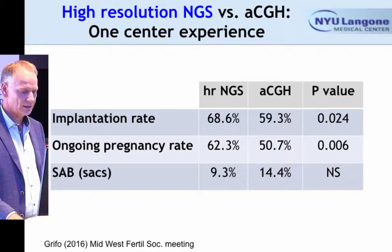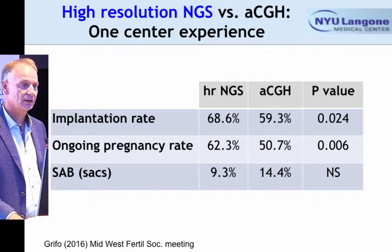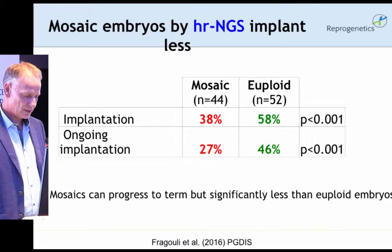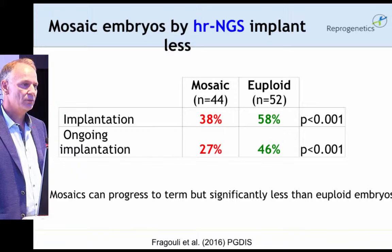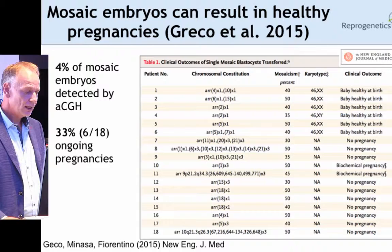These embryos are definitely contributing to the miscarriage rates seen with aCGH. Without PGS, you have between 17% and 40% miscarriage rate depending on maternal age. With aCGH, it's about 17%. With high-resolution next-generation sequencing, it's about 6%. So you can cut in half the rate of miscarriages if you move from aCGH to next-generation sequencing. This is data from NYU, who have done quite a number of cases with both techniques, and they see a trend towards lower miscarriage rates and an improvement in ongoing pregnancy rates with next-generation sequencing.